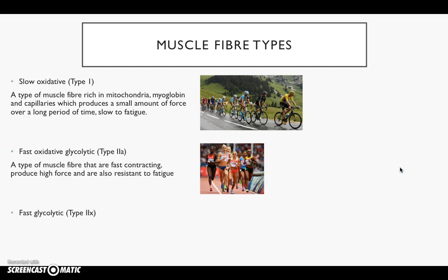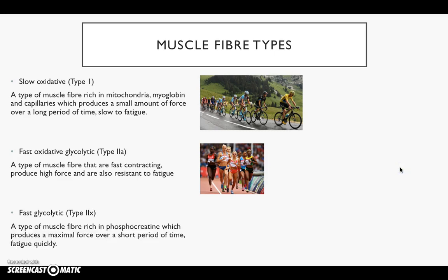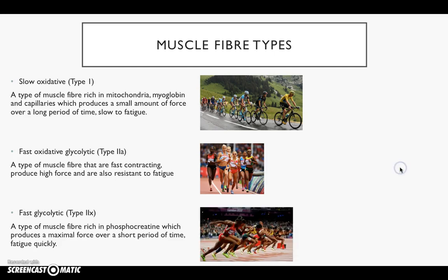Finally, the third type: fast glycolytic, type 2x. These muscle fibres are rich in phosphocreatine, produce maximal force over a short period of time, and fatigue quickly. The events we're looking at include shot put, the 100 metre sprint, javelin throw, long jump — anything that uses maximal force over a short period of time.